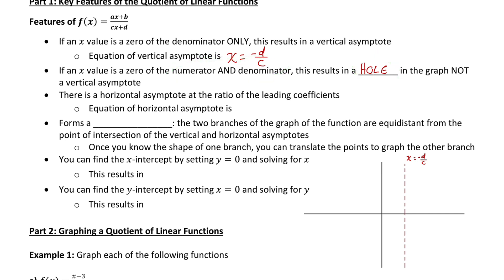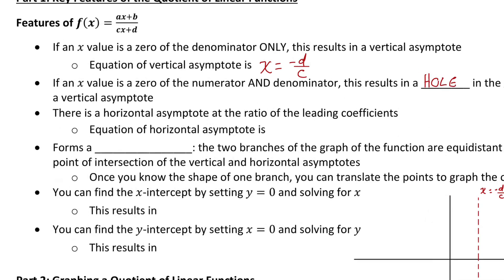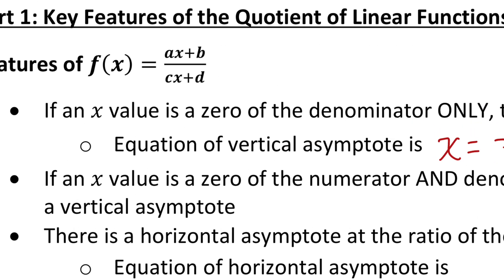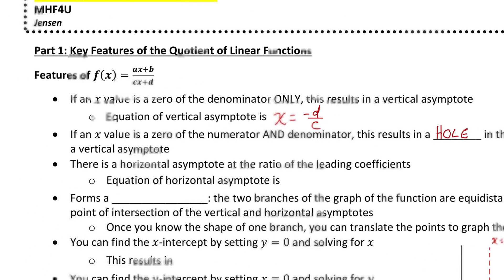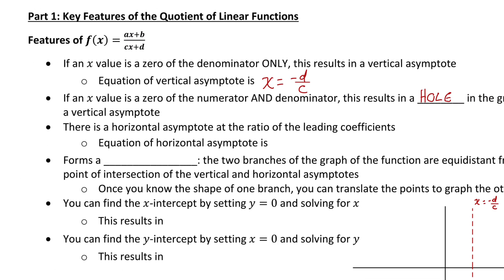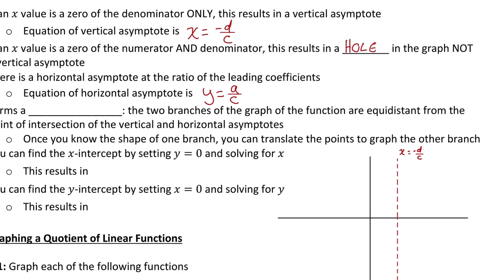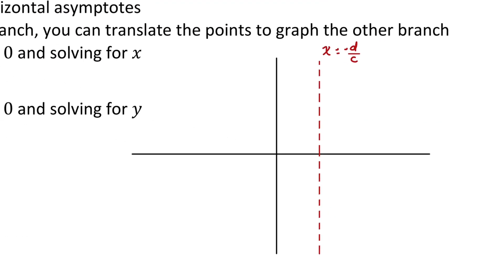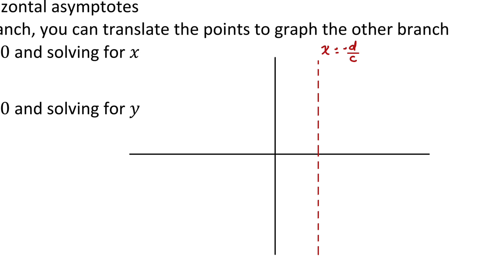The next property: there is a horizontal asymptote at the ratio of the leading coefficients. If I look at this general quotient of linear functions, the leading coefficients are a and c. So to find the equation of the horizontal asymptote, it would be y equals a divided by c. After we do an actual example, I'll explain using limits why that is the horizontal asymptote. On my graph, let's draw in a horizontal asymptote at y equals a over c.